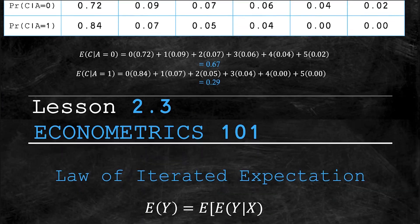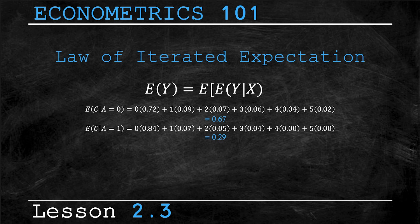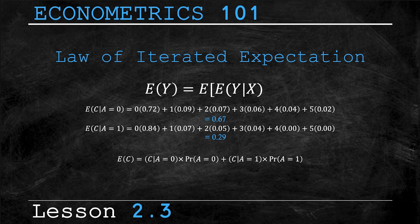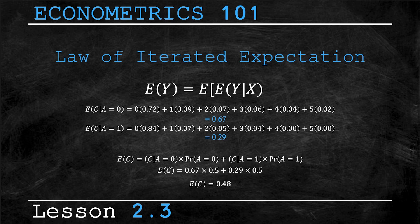Let's move on to the final topic: the law of iterated expectations. The formula shows that the expectation of Y is the weighted average of the conditional expectation of Y given X, weighted by the probability distribution of X. Subbing in our values: the expected number of computer crashes regardless of computer type is 0.67 times the probability of an old computer (0.5), plus 0.29 times the probability of a new computer (0.5), which equals 0.48 crashes.